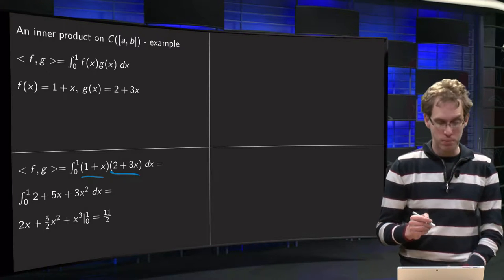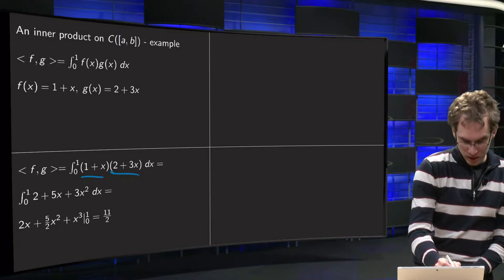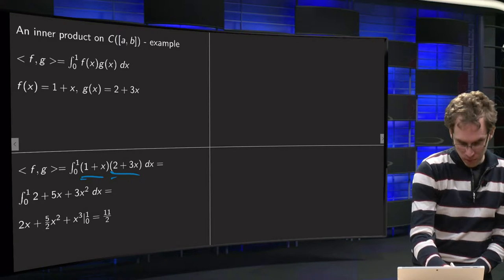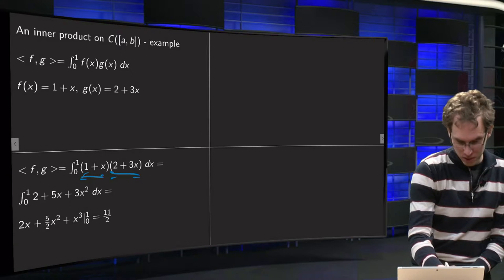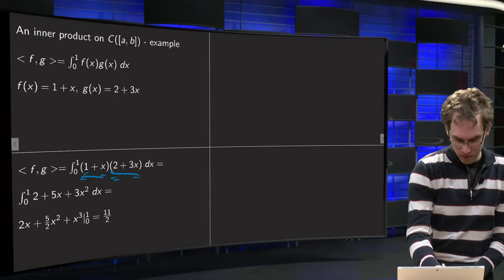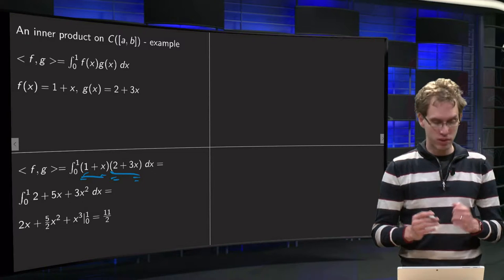Of course we need to expand the bracket first. So we get 1 times 2 equals 2, 1 times 3x plus x times 2 equals 3x plus 2x equals 5x, plus 3 times x squared, so 3x squared.